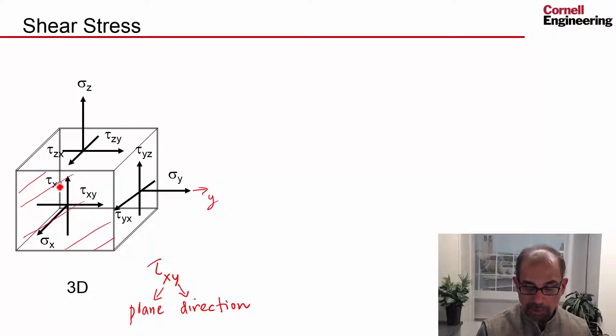Similarly for tau xz. If you go to this plane that's perpendicular to the first plane, you have two shears on that plane and then two shears on this plane. So you have one, two, three, four, five, six shear stresses to consider.